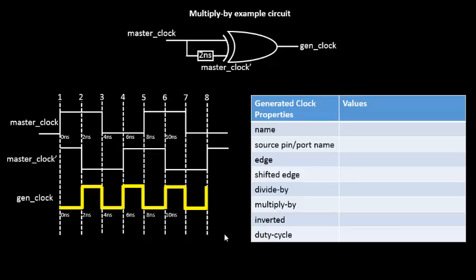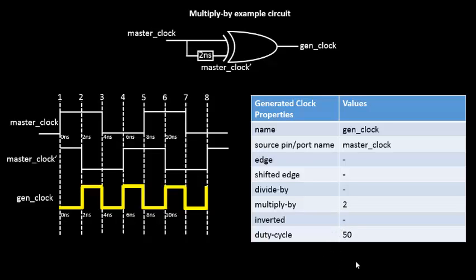Now, how do we code this waveform? You have the gen_clock, the master clock, and the multiply-by option. You simply set multiply-by to 2 and give a 50% duty cycle. That's all that's needed to define a multiply-by circuit. If the circuit instead created an output waveform with a 30/70 duty cycle — rising for 30% of the clock cycle and falling for 70% — you just keep multiply-by at 2 and modify the duty cycle to 30. That will define your rising edge and the remainder covers your fall edge. The multiply-by circuit is quite simple.